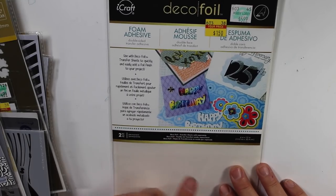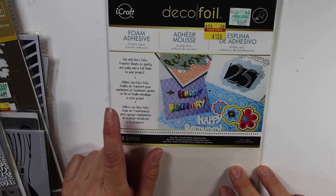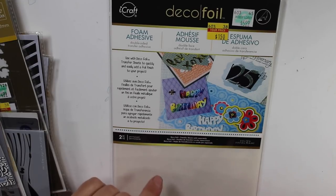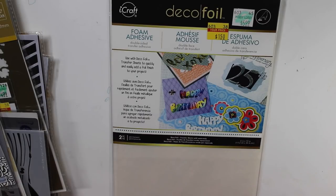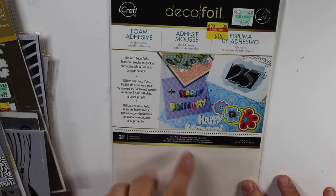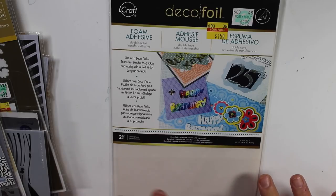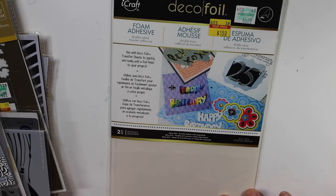Next thing I got to go along with the foil was this deco foil foam adhesive. It's double sided transfer adhesive and it is used for to transfer and add a foil finish to your projects. So I guess you can stick it on, cut it out, maybe, you know, through your die cutting machines and then you can have kind of like foil letters and numbers. So that seems kind of interesting. So this was a $1.50 and I picked that up.